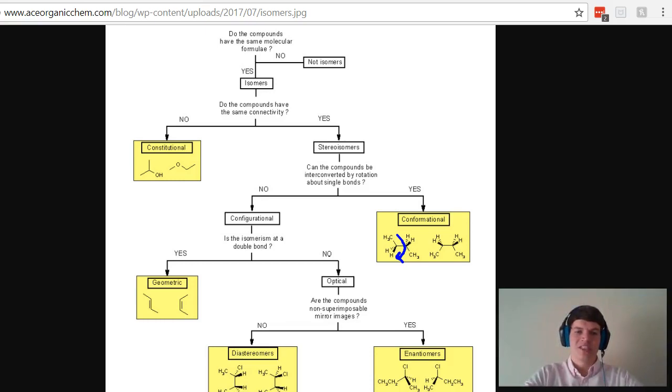If we answer no to the question, we know we're dealing with configurational isomers. And now we ask ourselves, is the isomerism at a double bond? If so, we're dealing with geometric isomers. And the reason geometric isomers are so different than conformational isomers is that geometric isomers cannot rotate about that bond because it's a double bond. It's very fixed. Whereas conformational isomers are about a single bond so they can rotate freely.